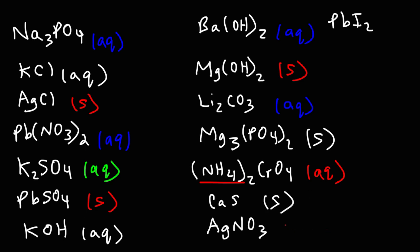Silver nitrate: nitrates are soluble — that's one of the first rules — so that's aqueous. Lead(II) iodide: iodide is a halide, which is generally soluble, but lead is an exception, so we put solid for that. That's basically it for this video — now you know how to determine if a compound is soluble or insoluble using the solubility table. Thanks for watching.